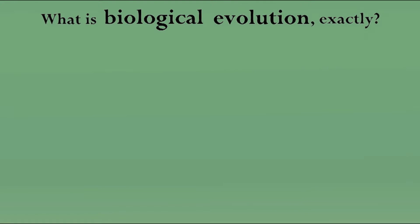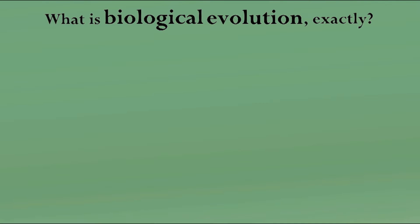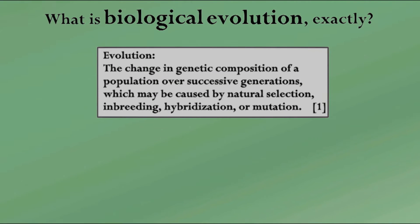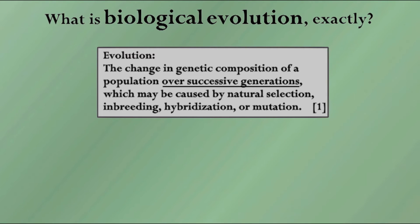What we're talking about here is biological evolution. And since science is all about well-defined terms, let's find one for this. The precise definition may vary slightly depending on the source, but let's go with this one: the change in genetic composition of a population over successive generations, which may be caused by natural selection, inbreeding, hybridization, or mutation. To express this more simply, evolution pertains to the process of change that occurs within a population of organisms over successive generations through natural selection and other selection mechanisms.